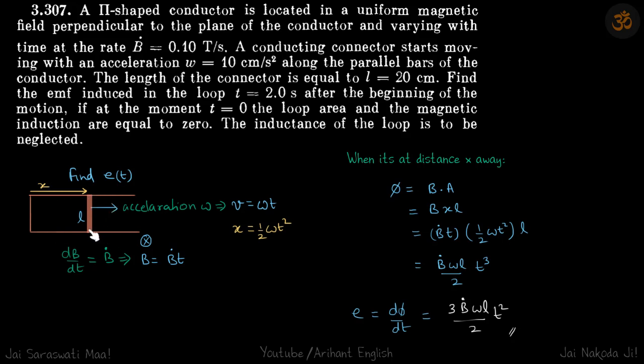In this conductor, this rod of length L is travelling with an acceleration omega. The rate of change of magnetic field is given as B dot and the field is directed inside the plane. We are supposed to find the EMF as a function of time.